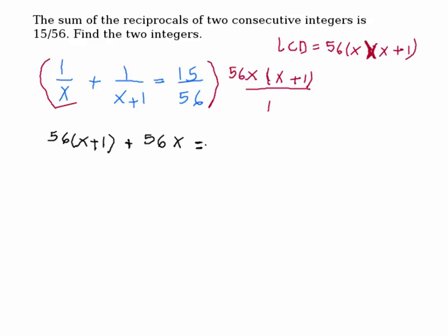And the last term — 56 cancels, and we get 15 times x times (x plus 1). So to get the equation, the next step is to distribute. We get 56x plus 56x on the left-hand side.